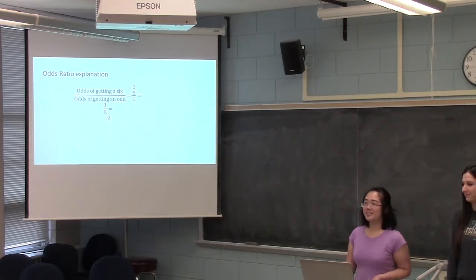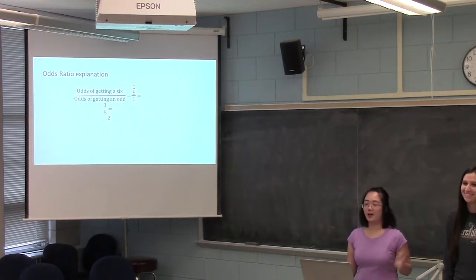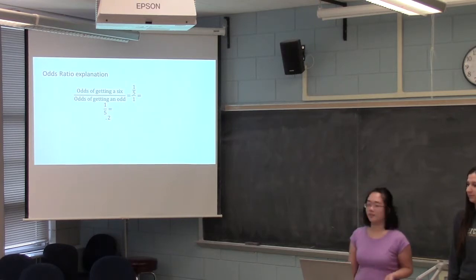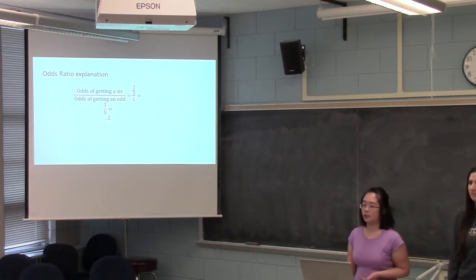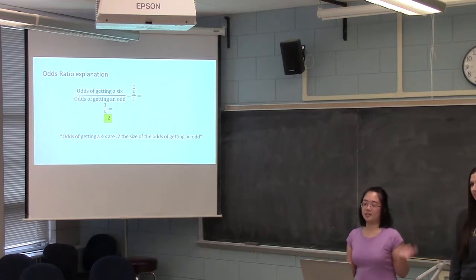So here's an explanation of an odds ratio. To calculate your odds ratio for these two examples, you have the odds of getting a 6, which is 1 fifth, and divide that by the odds of getting an odd, which is 1, and you get 0.2. So the meaning of this is you would say the odds of you getting a 6 are 0.2 times the size of the odds of getting an odd.